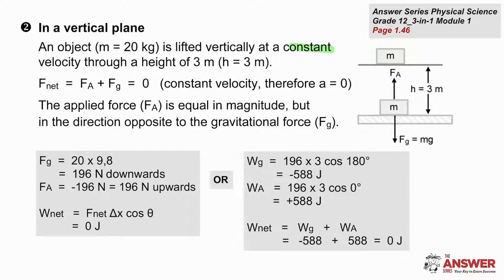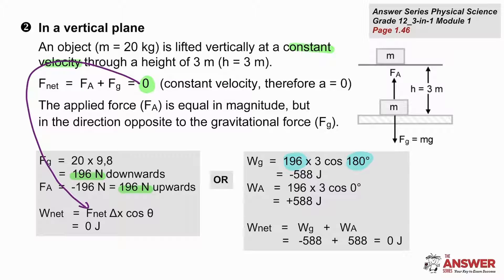If the object is moving vertically at a constant velocity, the net force is once again zero. The gravitational force is 196 newtons downwards, and so the applied force must be 196 newtons upwards. Because the net force is zero, when we substitute it into the work equation, we get the net work on that object of zero joules. We can calculate the work done by each force separately: the gravitational force acting in the opposite direction to the motion gives negative work, while the applied force acting in the same direction gives positive work. The sum of works gives us a net work of zero joules.